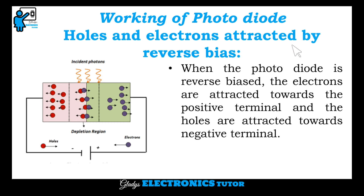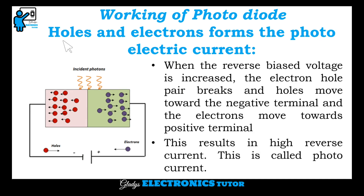Next, holes and electrons are attracted by reverse bias. When the photodiode is reverse biased, the electrons are attracted towards the positive terminal and the holes are attracted towards the negative terminal. When the reverse biased voltage is increased, the electron hole pair breaks and the hole moves towards the negative terminal. This results in high reverse current, called photocurrent.